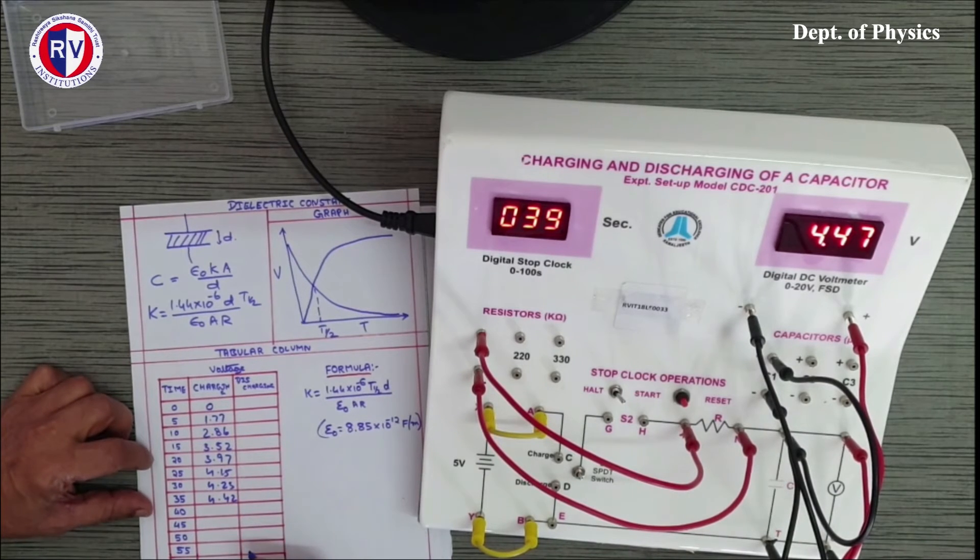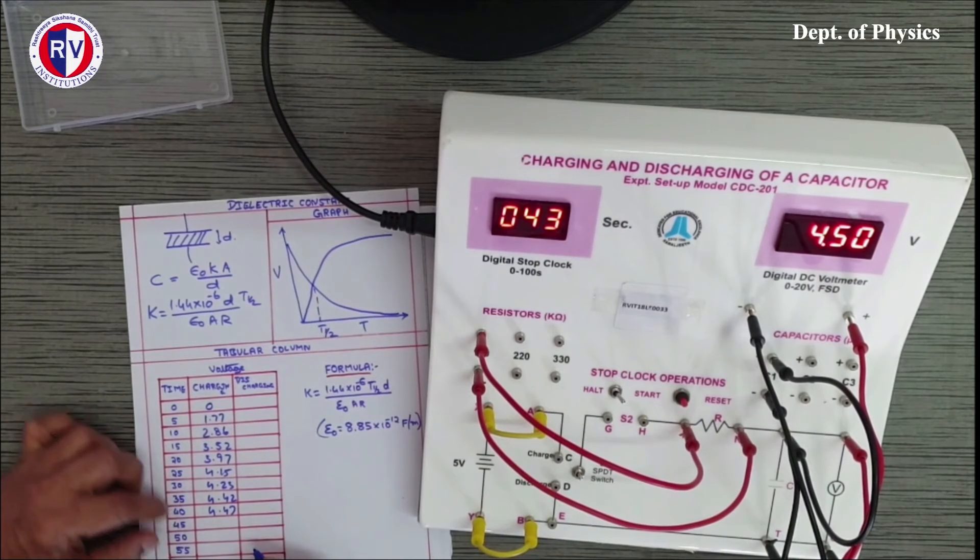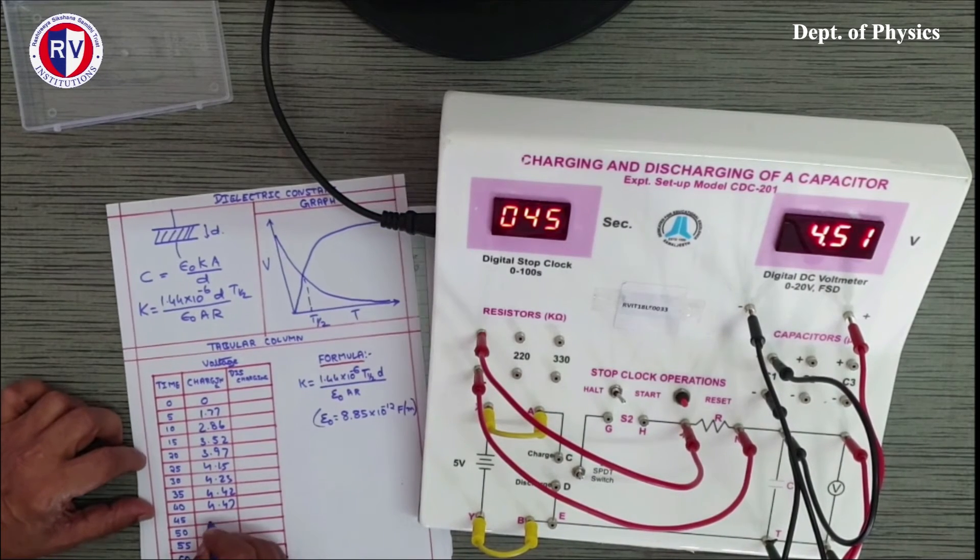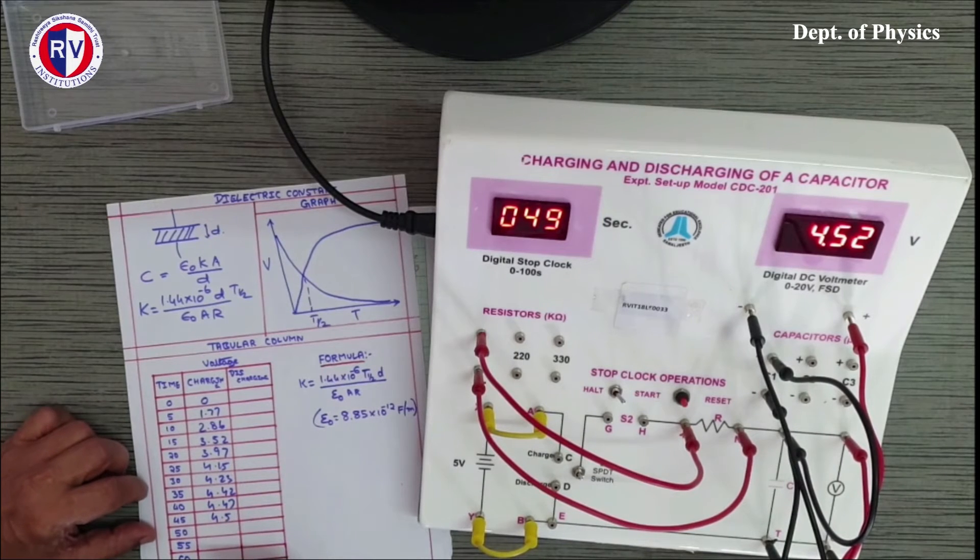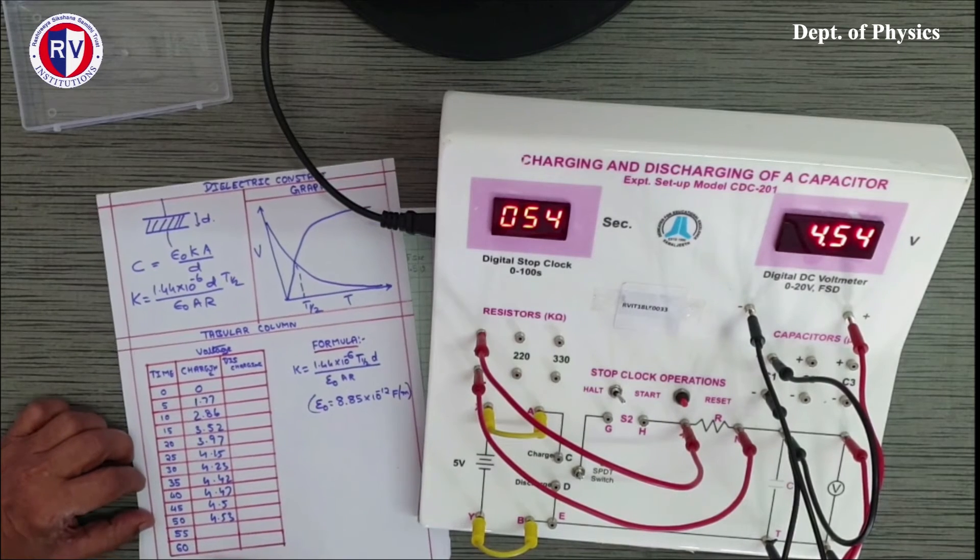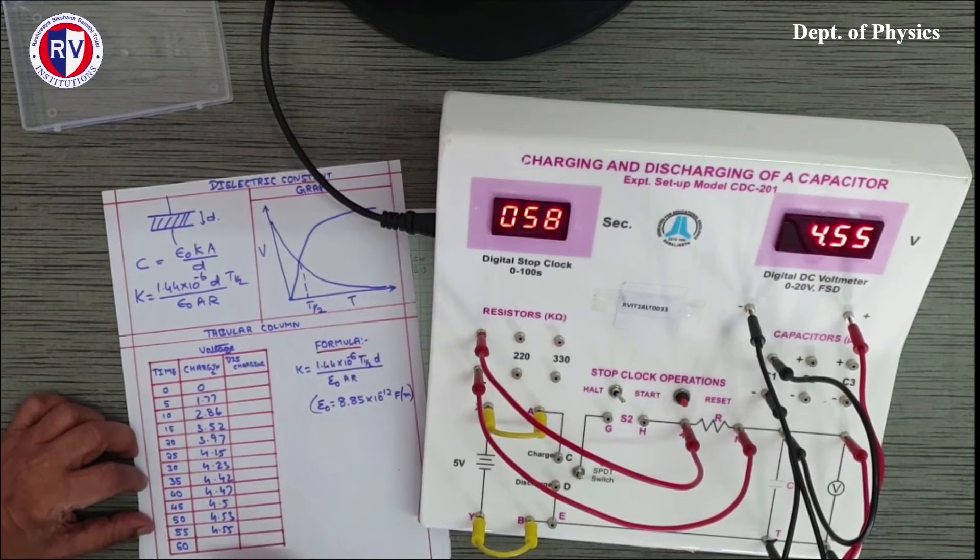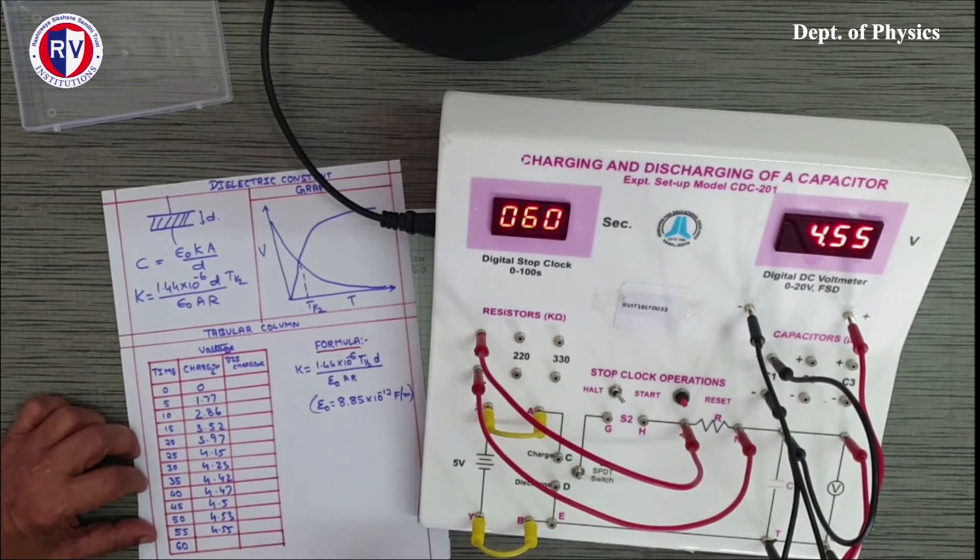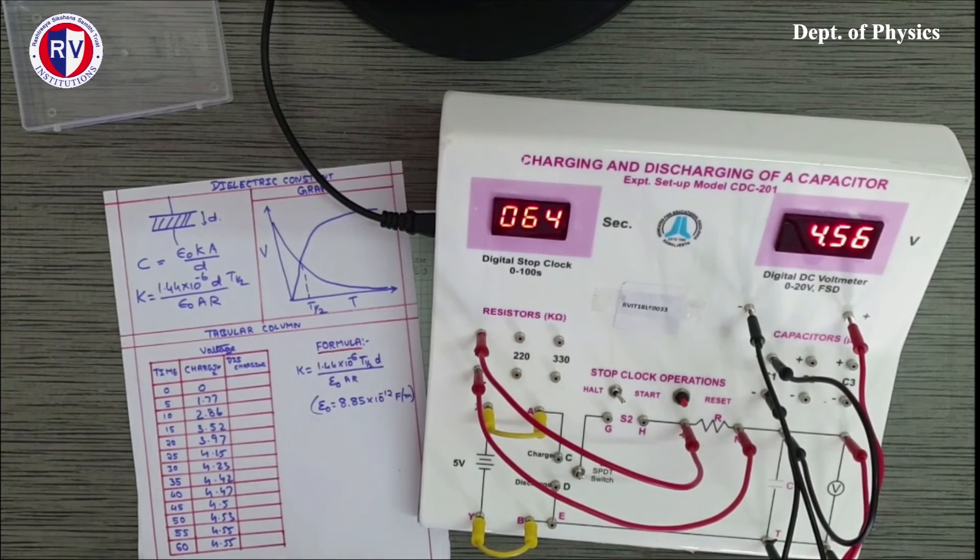We can do this until the voltage becomes almost steady. Nearly 35 seconds 4.42, then 40 seconds it is 4.47. The gap is reducing down. 45 seconds we have 4.5, then 50, 4.53, 55 it is 4.55, 60 also it is 4.55. The charging has come to the maximum.